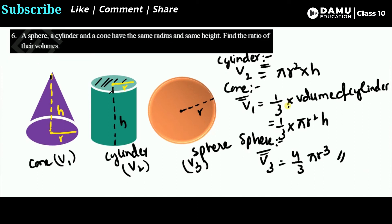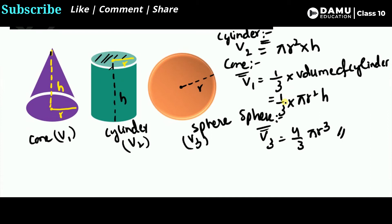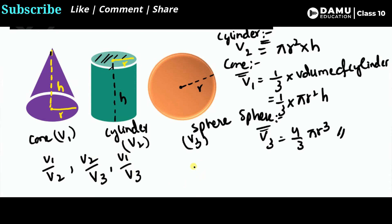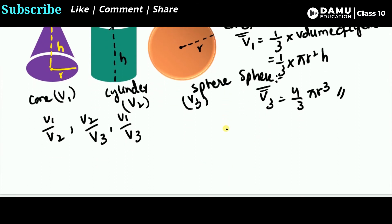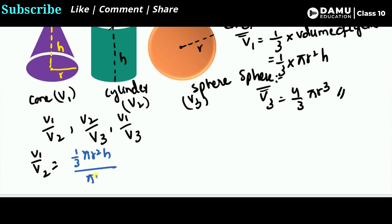The ratios we need to find are: V1 to V2 (cone to cylinder), V2 to V3 (cylinder to sphere), and V1 to V3 (cone to sphere). Let's start with V1 by V2. V1 is the cone volume, which is one-third pi r squared h, divided by V2, the cylinder volume, which is pi r squared h.